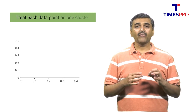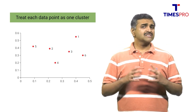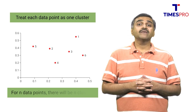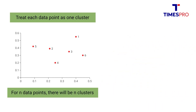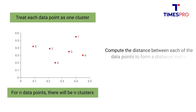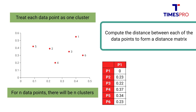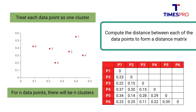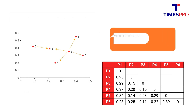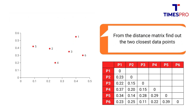Let's understand the steps involved in agglomerative clustering. First, we select each data point as one cluster — if we have n data points, there will be n clusters. Next, we compute the distance between each of the data points to form a distance matrix. Here is a distance matrix where the distance between each pair of data points is computed. From the distance matrix, we find out the two closest data points.